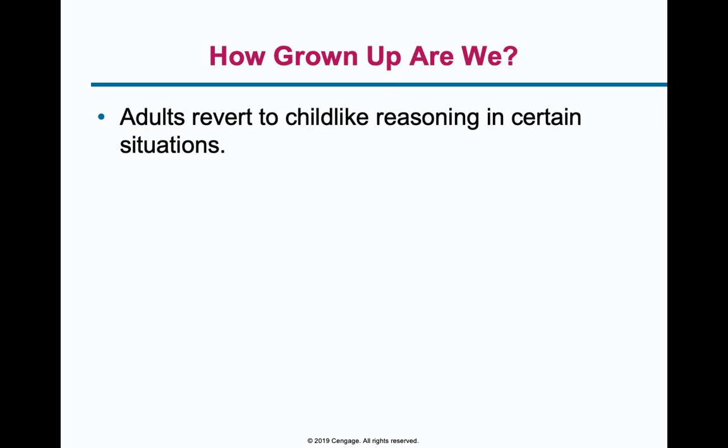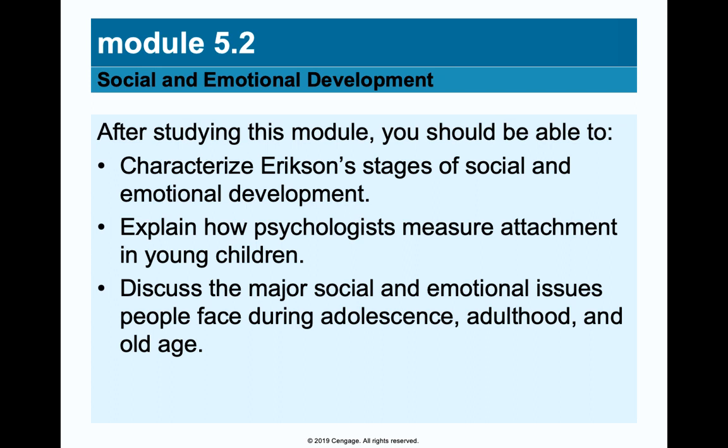By age 25, most brain structures that are going to develop are pretty well developed, though you continue to specialize over time. The concepts of adolescence and adulthood are somewhat arbitrary — is an adolescent 17 and under? An adult 18 and over? These are questions we should ask. In Module Two we'll talk about Erikson's age stages, attachment theory, and issues in adolescence, adulthood, and old age.